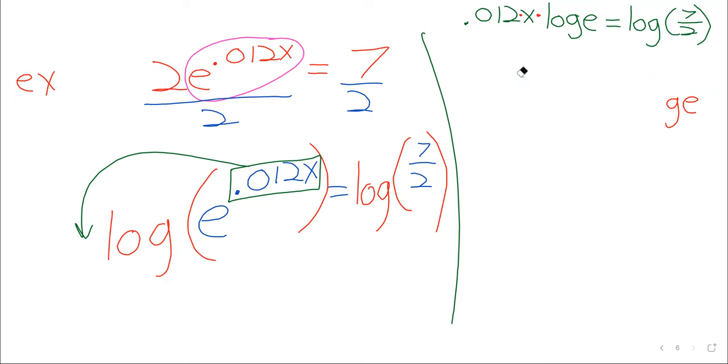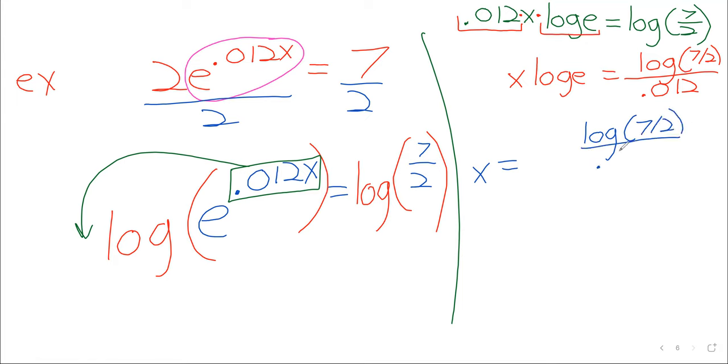Another way to think about this is that we have two multiplications. We've got multiplication by 0.012, and we've got multiplication by the log of e, and we need to get rid of both those products. Well, to get rid of the 0.012, you would divide both sides by 0.012 and divide by the logarithm of e.